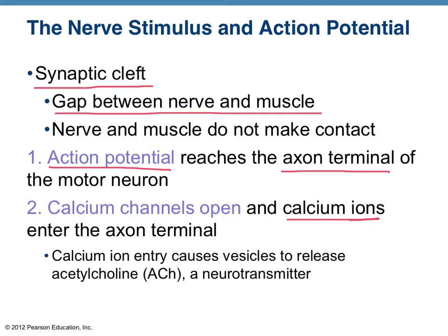We've talked about in the skeletal system unit and in homeostatic mechanisms how calcium ions are really important to muscle contraction, and here's one of the first ways — they flood into the axon terminal. What that causes is the vesicles inside of the axon terminal to release ACH, a neurotransmitter — acetylcholine. ACH is released into the synapse. So the action potential flows down the terminal, gets there, opens channels, calcium ions flood in, which then releases the ACH neurotransmitter.